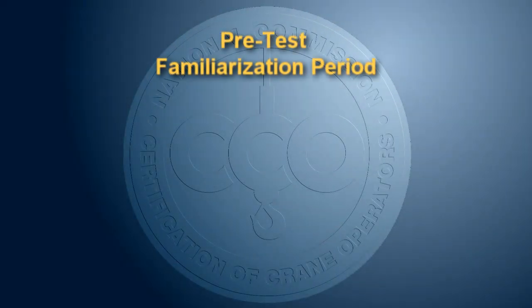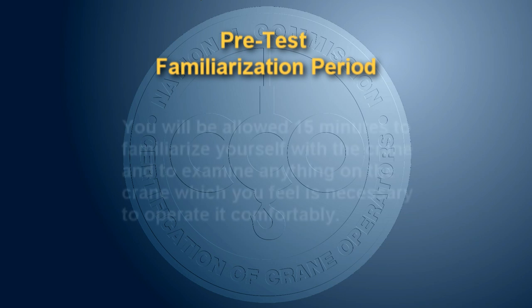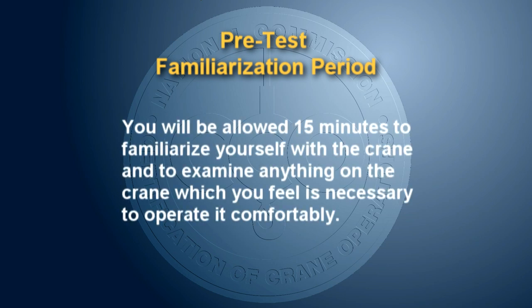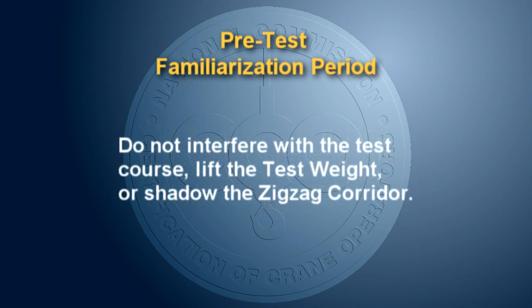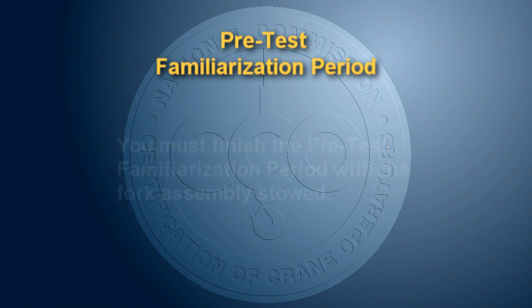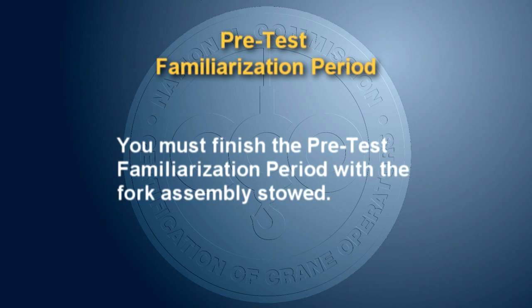Pre-test familiarization period. You will be allowed 15 minutes to familiarize yourself with the crane and to examine anything on the crane which you feel is necessary to operate it comfortably. You are allowed to get the feel of the controls and are permitted to run the crane through its functions. Do not interfere with the test course, lift the test weight, or shadow the zigzag corridor. You must finish the pre-test familiarization period with the fork assembly stowed.